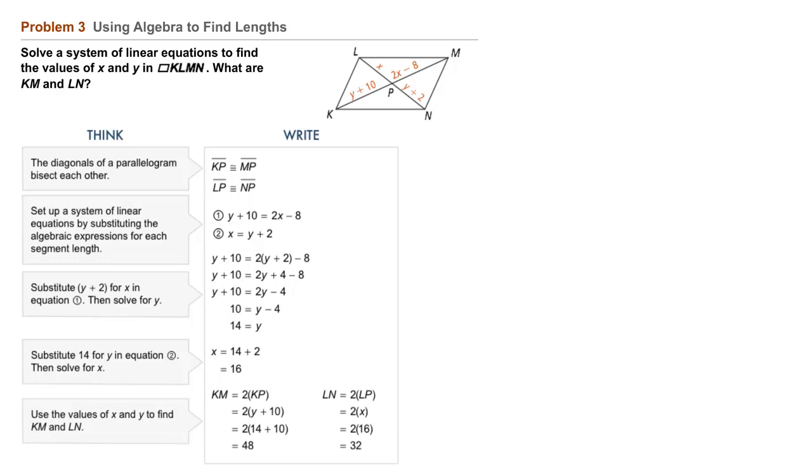Finally, we'll use the values of X and Y to find KM and LN. We know that KM equals 2 times KP, and KP is Y plus 10. Y is 14, so we find that KM equals 48.